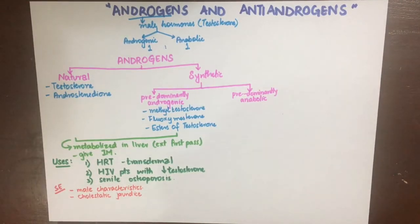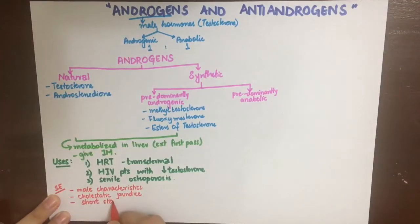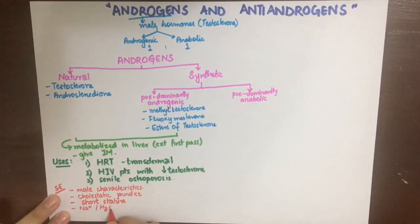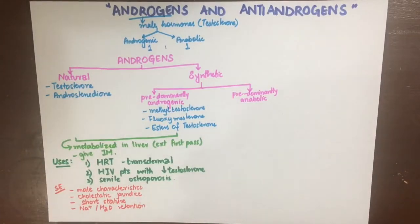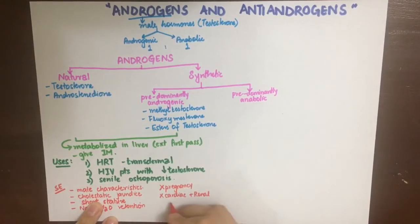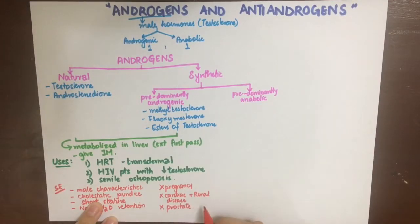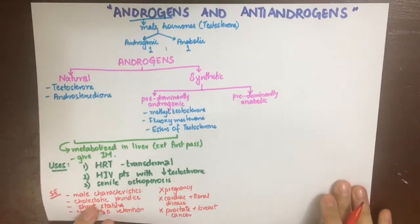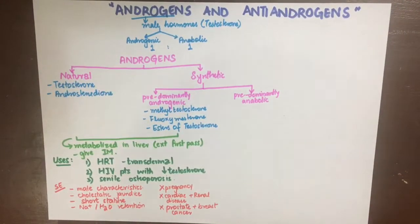These androgens can also cause cholestatic jaundice because they are eliminated by the liver, and in high doses this can occur. In children, they will cause short stature due to premature closure of the epiphysis. They can also cause sodium and water retention due to their mineralocorticoid activity. They are contraindicated in pregnancy due to virilization of the fetus, and contraindicated in cardiac and renal disease, as well as in prostate and breast cancer, because these cancers have androgenic receptors and testosterone will increase their growth.